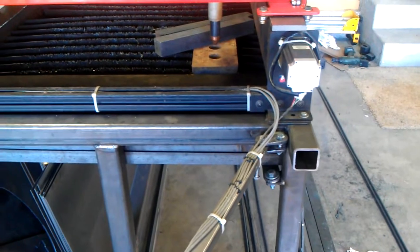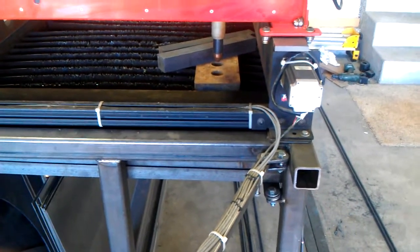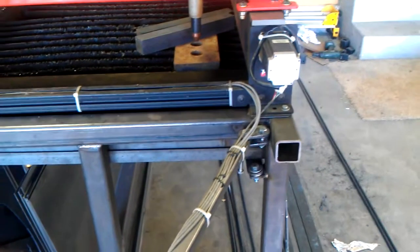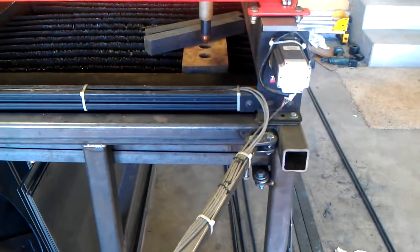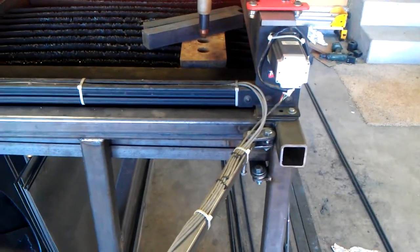And we're going to be cutting with the Hypertherm PowerMax 1250 at 80 amps at 10 inches per minute. And I have the arc voltage height controller in manual mode actually.